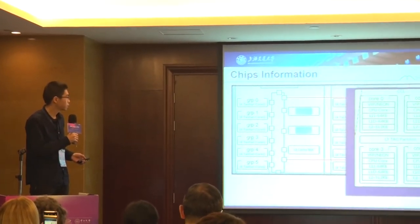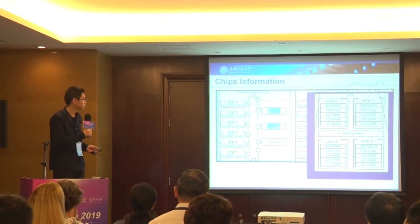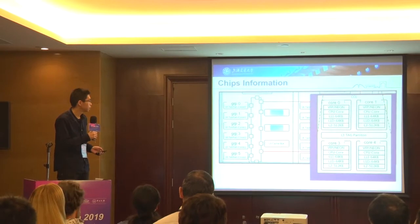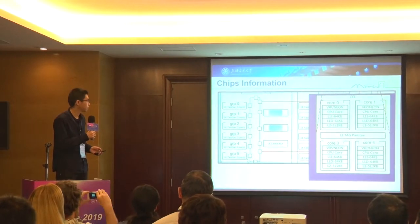Due to some limitations and regulations, I can't publicize some real data, so I will give data as scale or percentage. This is a basic graph of this chip. You can see Huawei's chip has many groups in the ring, and it has a dual ring.